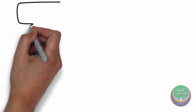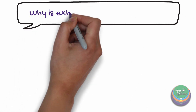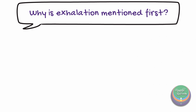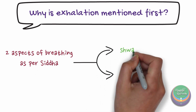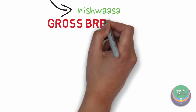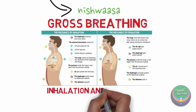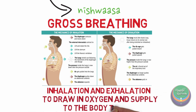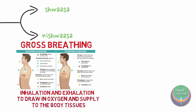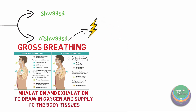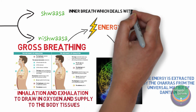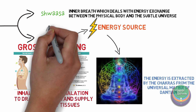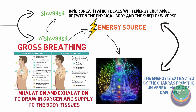The process of respiration has been told to start from the Nabhi, where the Prana is spelled out. Why is this process of expiration mentioned first? In Siddha, there are two aspects to breathing: Shvasa and Nishvasa. Nishvasa is the gross breathing which includes inhalation and exhalation carried out by the lungs to draw in oxygen and supply to the body tissues. Shvasa, however, is the inner breath which deals with the energy exchange between the body and the universe. For Nishvasa to take place, there has to be a sub-source of energy which is extracted by the chakras every day in the Dantian. Shvasa is the subtler aspect of all the grosser functions that we observe in the body.